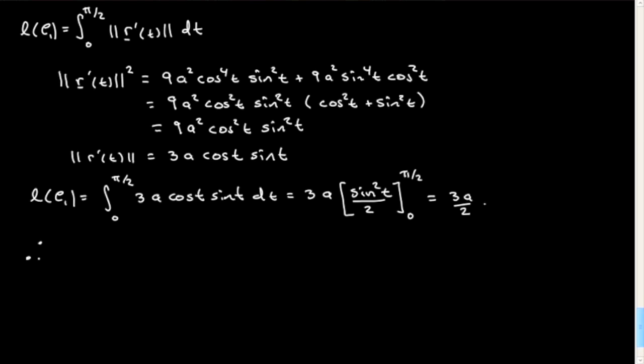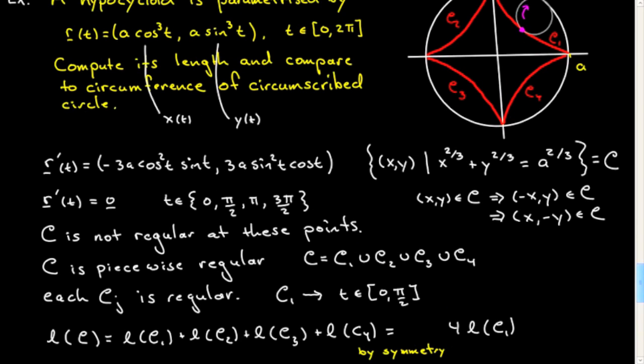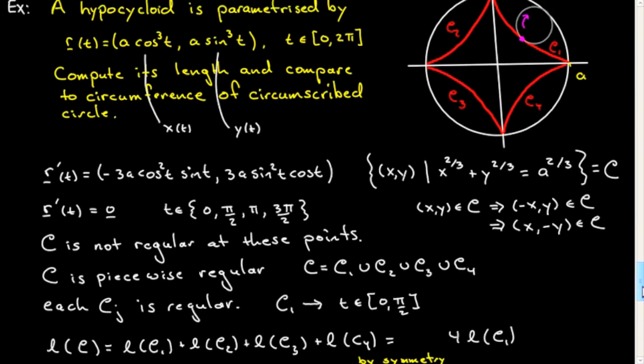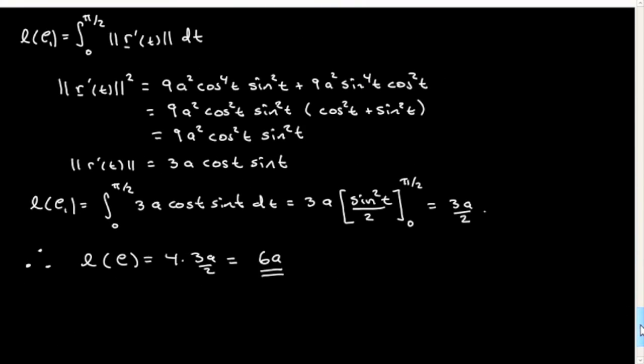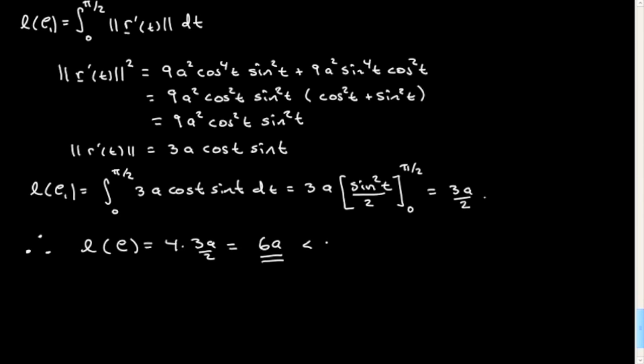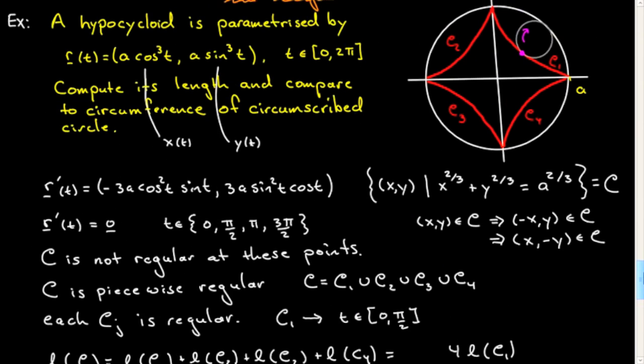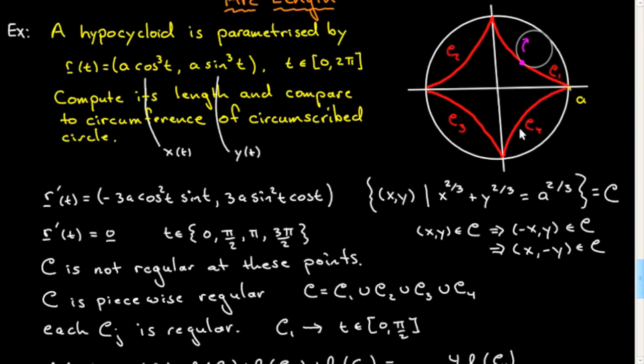Therefore, L(C), which we're asked to compute, will be equal to 4 times 3a/2, which is equal to 6a. So that is the length of the curve. I also said compare with the circumference of the circumscribed circle. The circumference of the circumscribed circle is 2πa, and so it's less than the circumference of the circumscribed circle, although it's rather close. 6 is quite close to 2π. 2π is bigger than 6, but it's quite close to it, and that makes sense when you look at this figure. Each of these arcs looks a lot like the circumscribed circle flipped in, but overall it's a little bit shorter.